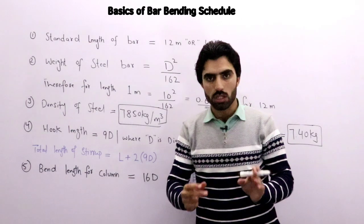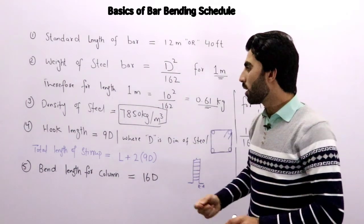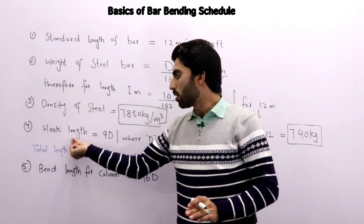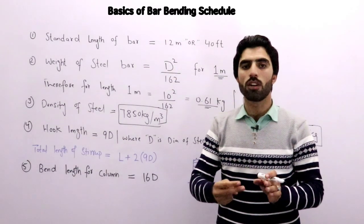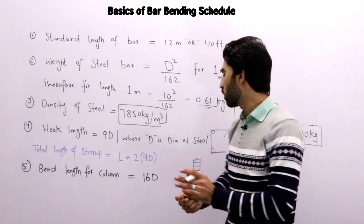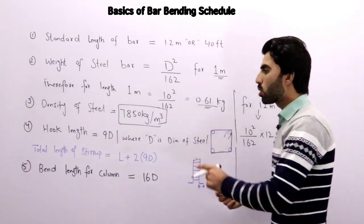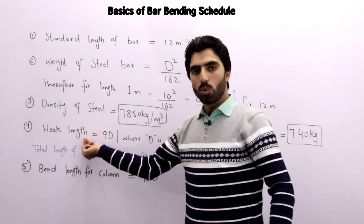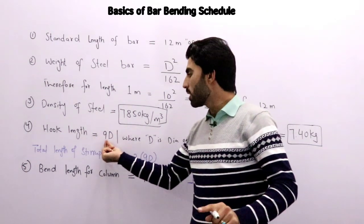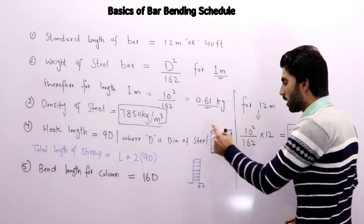Now hook length. If you want to find length of steel bar in stirrup, there are hooks you can see, especially for beam. Hook length we can find with the formula 9D, where D is diameter of steel, and these hooks you can see—two hooks should be present in each stirrup, especially in beam.